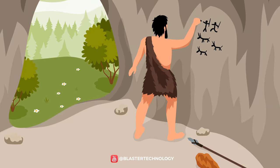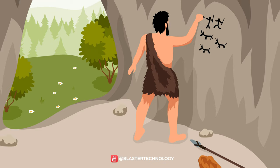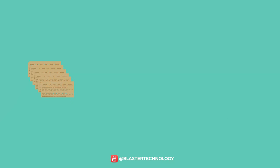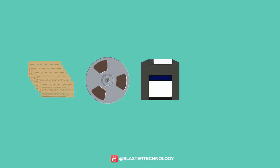The beginning of data storage dates back to antiquity, where our ancestors stored information on cave walls, then on papyrus, parchment, and paper. Let's see how data storage started and evolved.